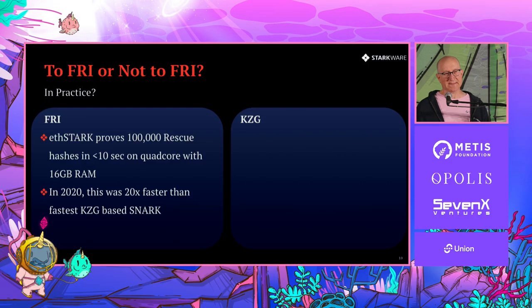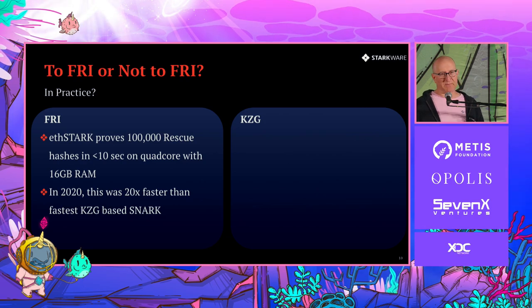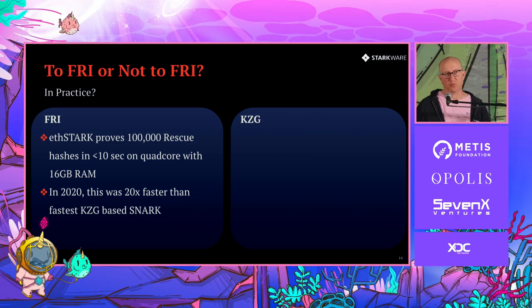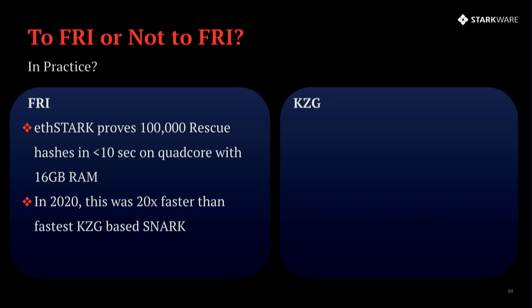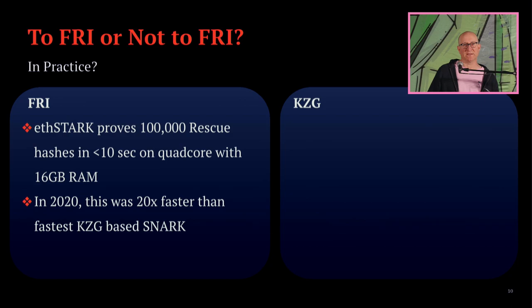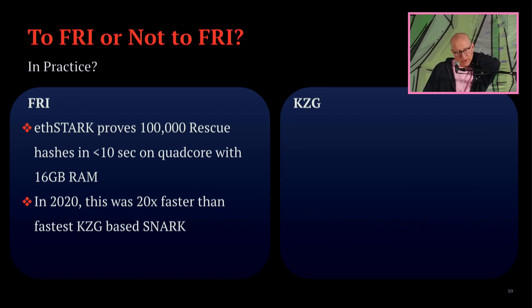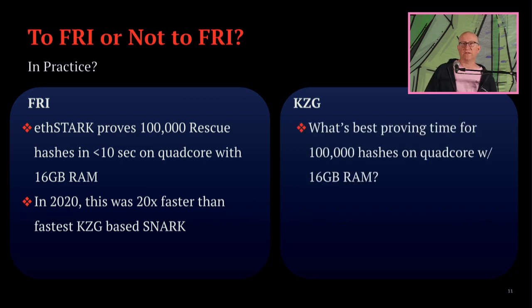In practice, when everything is combined, if you look at the FRI based system, to best of my knowledge, this is among the world records, even though it's like four years old. So we already showed four years ago, a construction over a 64 bit field that proves 100,000 rescue hashes in less than 10 seconds on a quad core with 16 gigabytes RAM. And this was at the time 20 times faster than the fastest known KZG based system SNARK. And we still don't know what is the best proving time for something similar. It would be a good measurement to do head by head, take your favorite algebraic hashing function and see how long does it take to prove 100,000 iterations of a hash on some simple hardware.